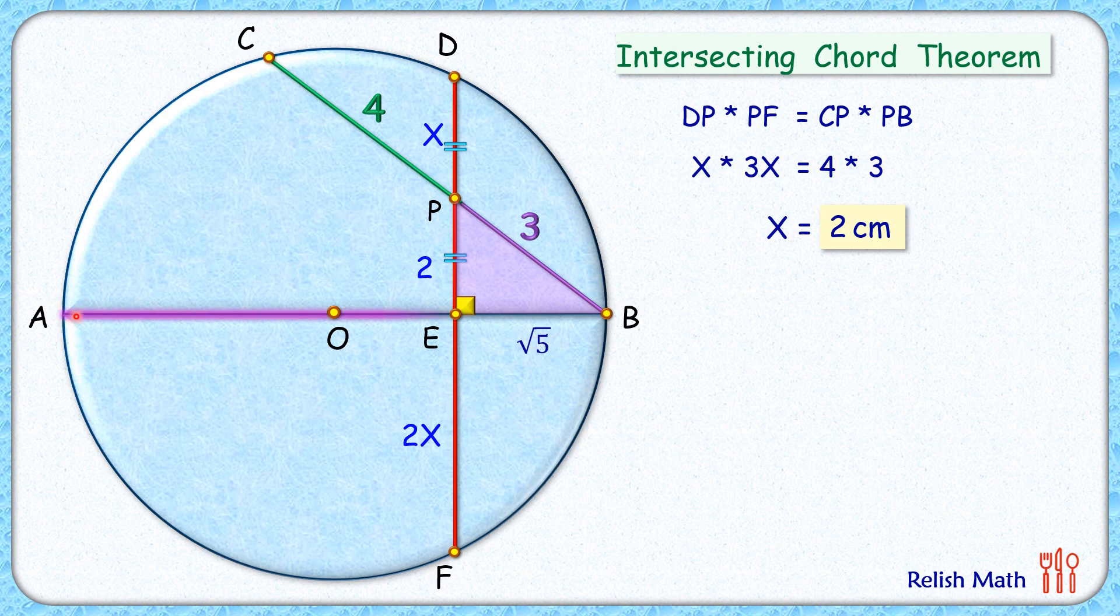Now in this circle, if you see, AB is a diameter which is intersecting chord DF, so here we can apply intersecting chord theorem again. So we'll get AE times EB equals DE times EF.